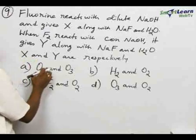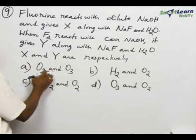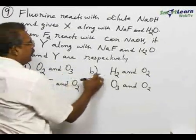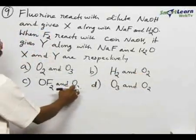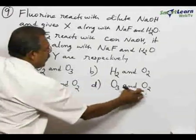We have to identify X and Y. Option A: O2 and O3. Option B: H2 and O2. Option C: OF2 and O2. Option D: O3 and O2.